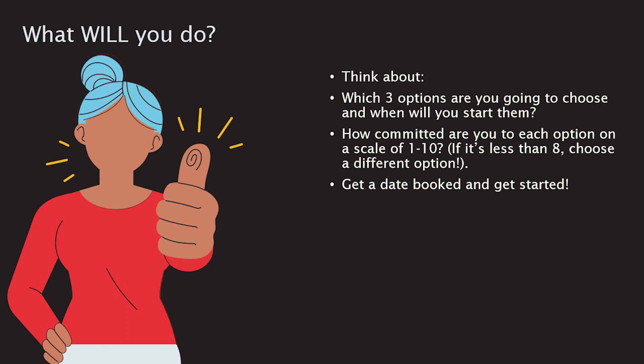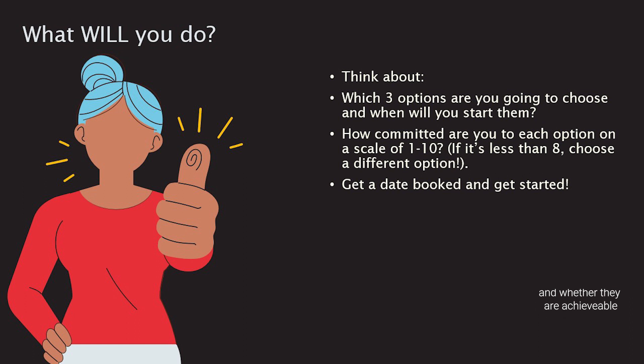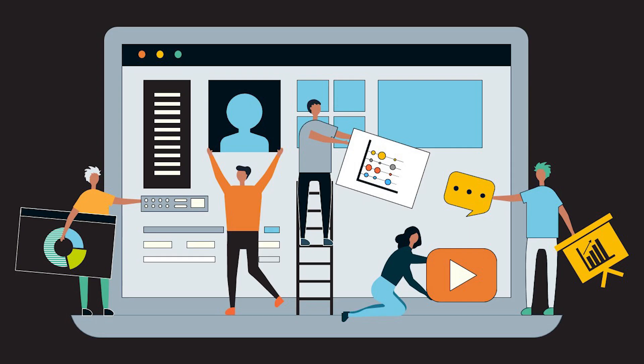You need to narrow down your options and decide when you will start them. The most important part is considering how committed you are to these actions. Use a scale from 1 to 10, where 10 is highly committed. If your commitment score is less than 8, it is unlikely that you will achieve it, so you need to rethink your choices or work out what might be stopping you from being fully committed. Once you have narrowed down your options, get some dates in the diary and stick to it.